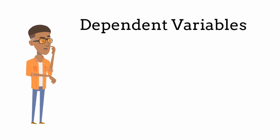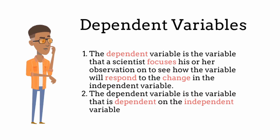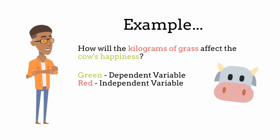The dependent variable is the variable that a scientist focuses observations on to see how it will respond to the change in the independent variable — in other words, it is dependent on the independent variable. For example: how will the kilograms of grass a cow gets to eat affect the cow's happiness? The kilograms of grass a cow gets to eat is the independent variable, and the cow's happiness is the dependent variable, because we are trying to determine if the cow's happiness is dependent on the kilograms of grass eaten.